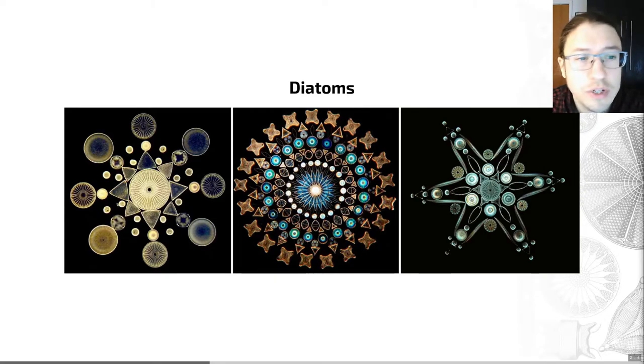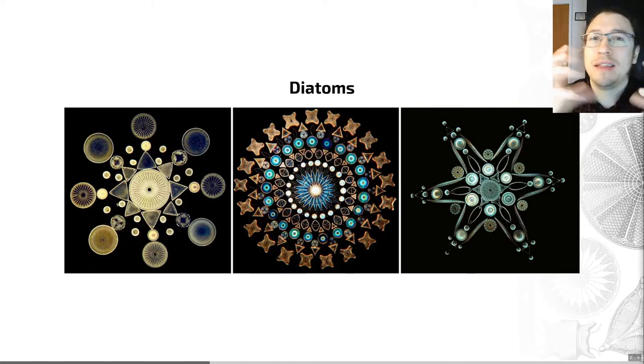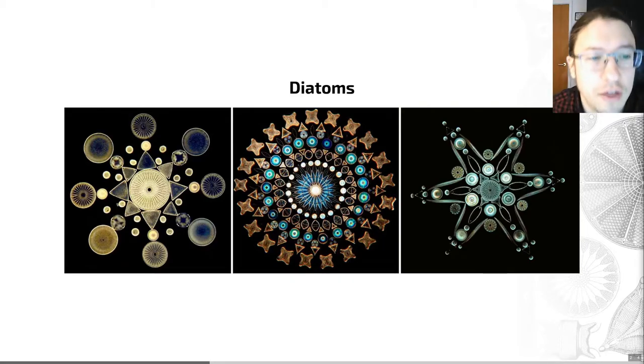Their cell wall is silicified and forms a structure called a frustule, which you'll find in your glossary. The frustule comprises two valves, one overlapping the other, like the lid of a box or two different-sized petri dishes slotting together.